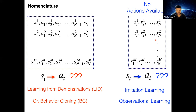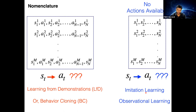There is another setup where we only have access to states, not actions — for example, watching a video on YouTube where someone is demonstrating a task. In that case we only know the observation sequence of states encountered. This setup is known as imitation learning or observational learning. Imitation learning is sometimes used as an umbrella term for all of these, but the key distinction is whether you have access to actions at train time or not.